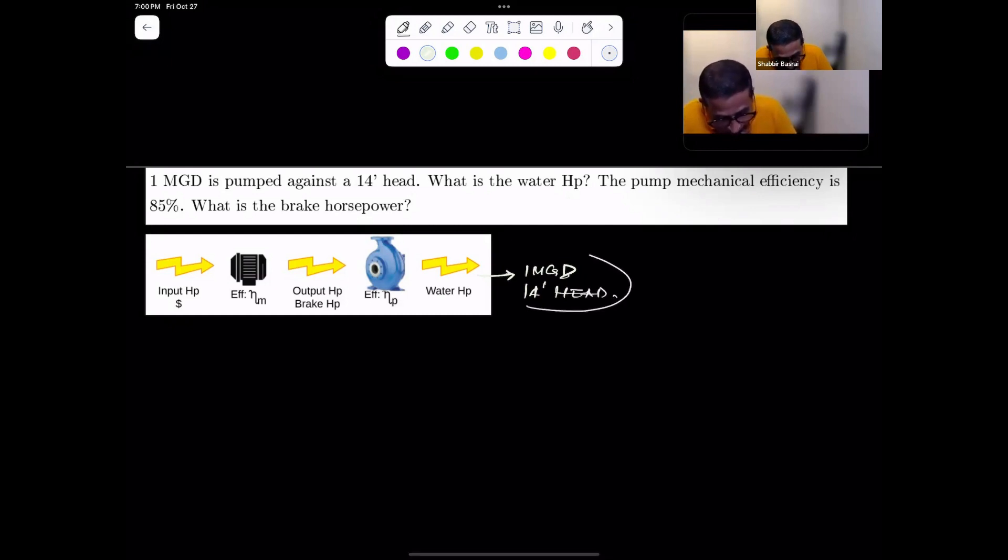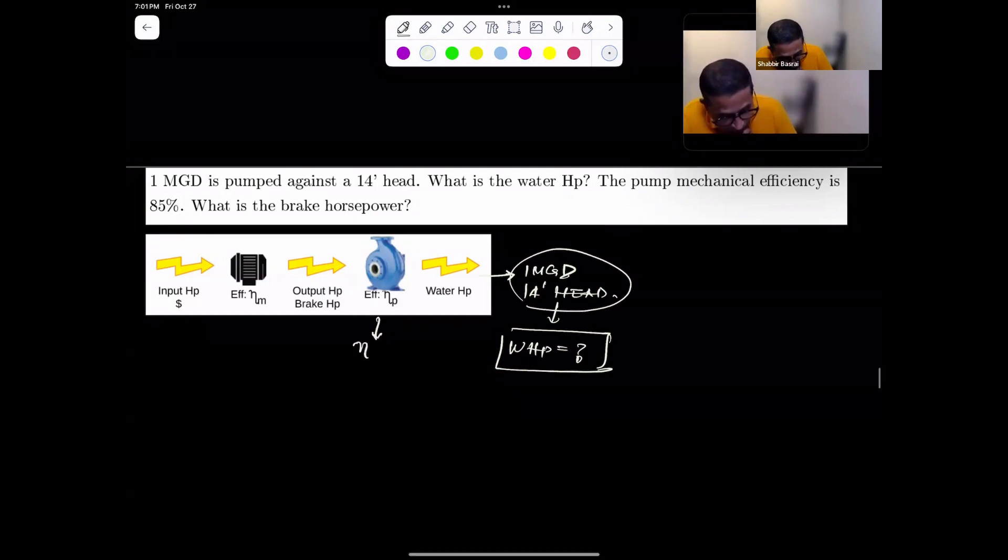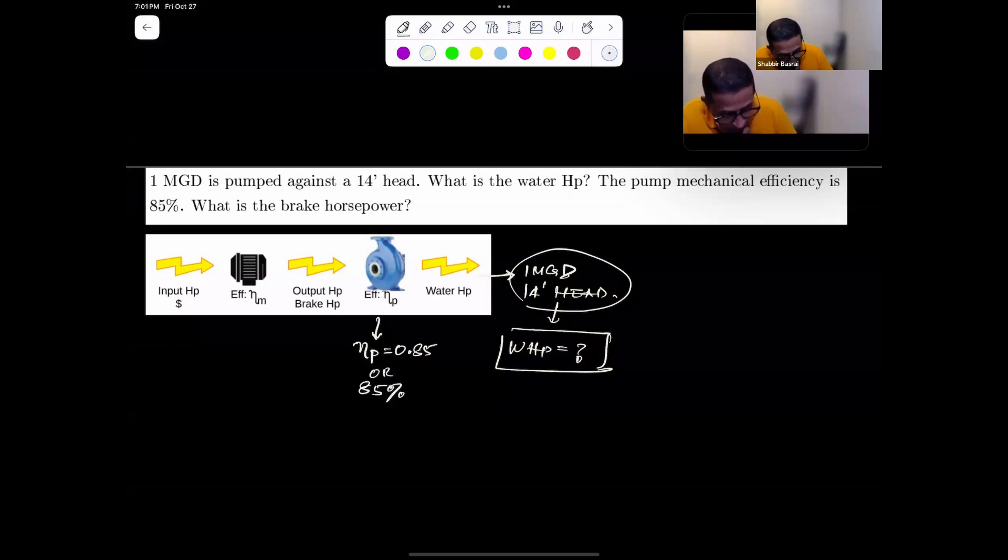Given this, they are asking us first, what is the water horsepower? And then the second thing is they're saying that the mechanical efficiency of the pump, eta P, is equal to 0.85 or 85%. And given that, they want us to find out the brake horsepower.